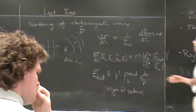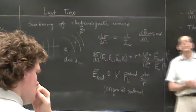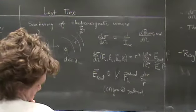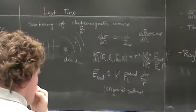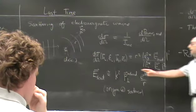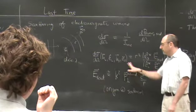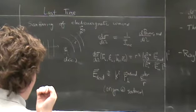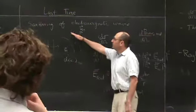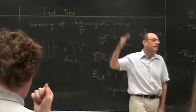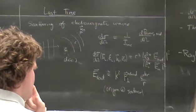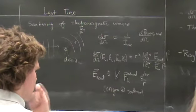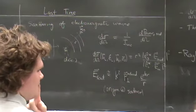Far from the source, the nature of the scattered field is a spherical wave with a vector amplitude that depends on the strength of the induced dipole moment. There's a vector dependence because the scattered electric field must be transverse to the direction of propagation. When we plug that in, we end up with a differential scattering cross-section which generally depends on polarization.